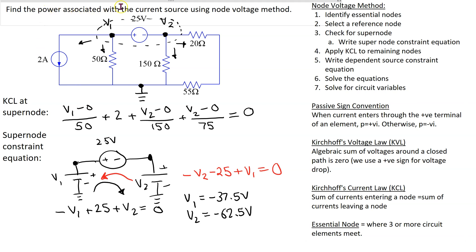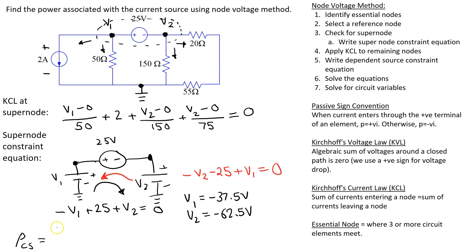The final step is to solve for the desired circuit variables. In this circuit we are asked to find the power associated with the current source. The power is given by the voltage drop across the current source multiplied by the current. The current source is directly connected between node one and ground, and since v1 is defined as a voltage rise with respect to ground, we associate this polarity with the voltage drop. So the power is v1 multiplied by 2 amps.